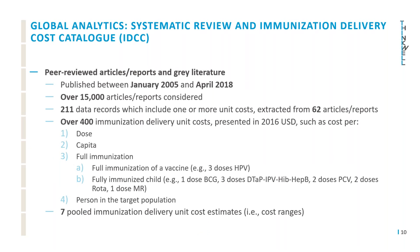For the systematic review, we considered peer-reviewed articles and reports, as well as gray literature, published between January 2005 and April 2018. We considered over 15,000 articles and reports, and from this we extracted data from 62 articles and reports, and added 211 data records, including one or more unit costs to the IDCC. These data records are accessible in both a Microsoft Excel tool and a web tool, which present over 400 immunization delivery unit costs, all in 2016 US dollars, including cost per dose, cost per capita, cost per full immunization, and cost per person in the target population. We also developed seven pooled immunization delivery unit cost estimates, or cost ranges.